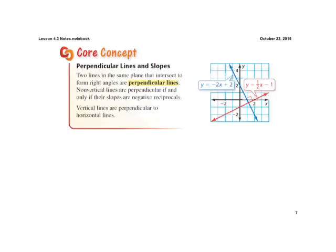Alright, moving right along, perpendicular lines. Okay, similar concept, except perpendicular lines form a right angle, and their slopes are what we call negative reciprocals.